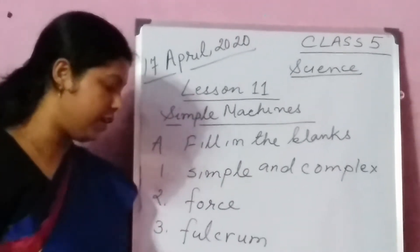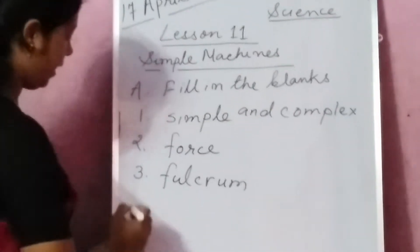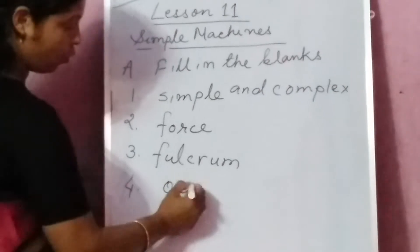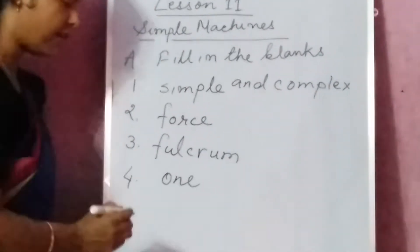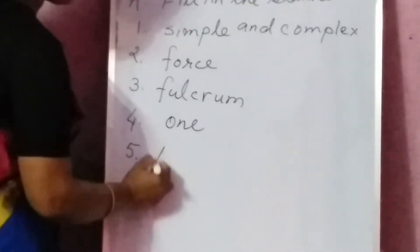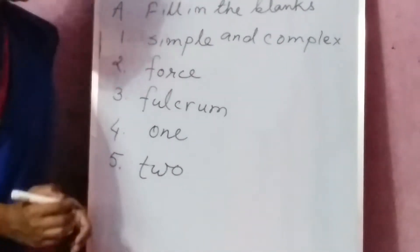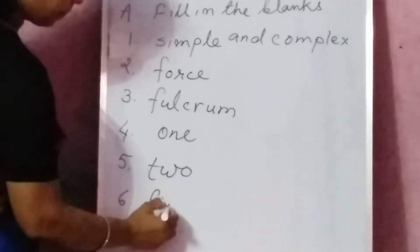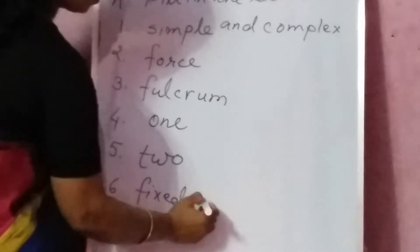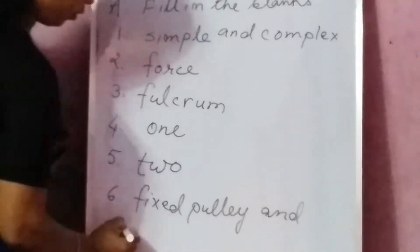In class 1 lever, the fulcrum is in between the effort and the load. Bottle openers, nutcrackers, and wheelbarrows are examples of class 2 lever. There are two main types of pulleys: fixed pulley and movable pulley.